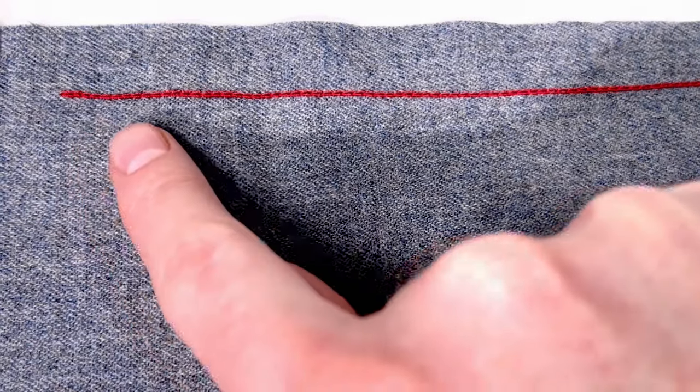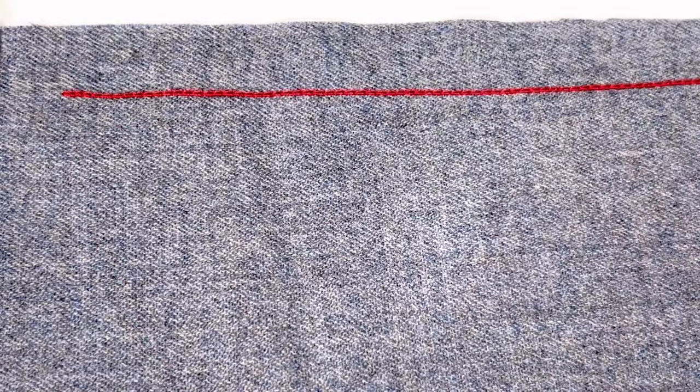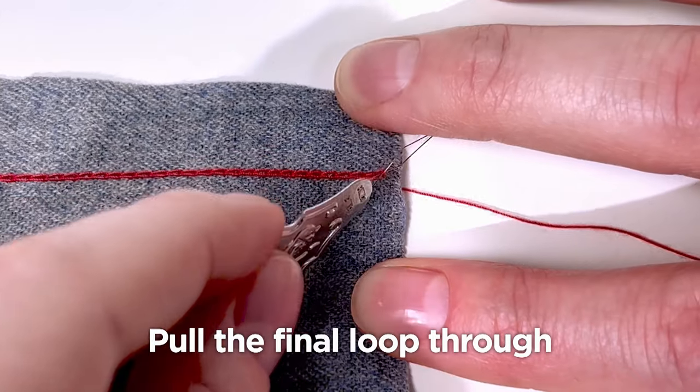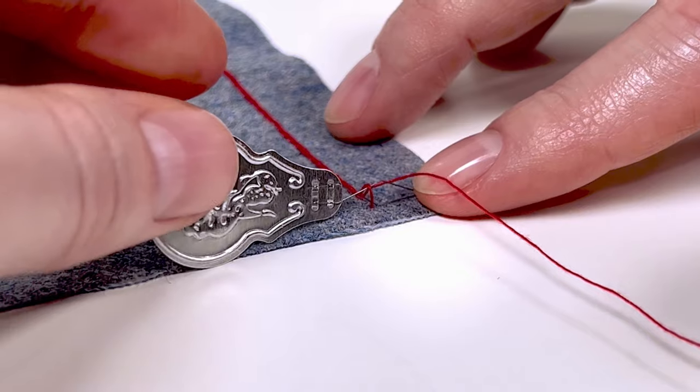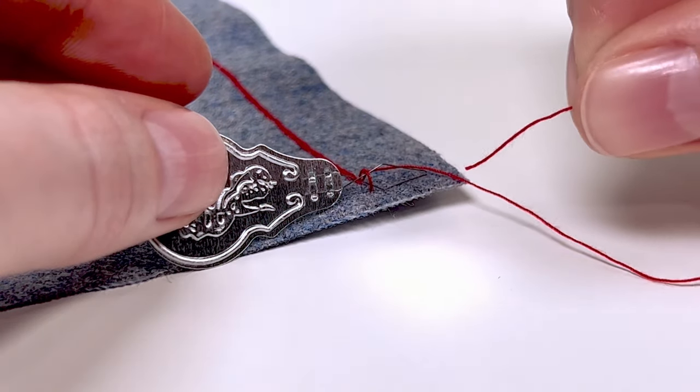On the reverse side of your fabric, you will see the magic stitch's chain stitch. To secure this, you'll need to pull the final loop through. To secure this further, use the remaining thread to create a small loop towards the end of the stitch.